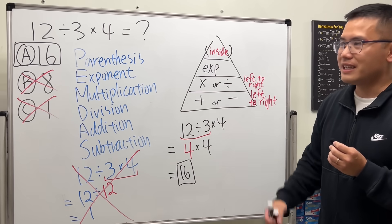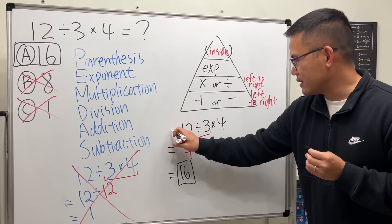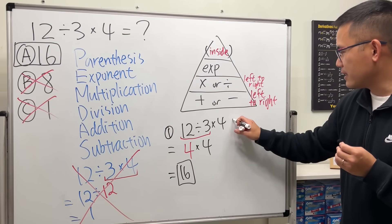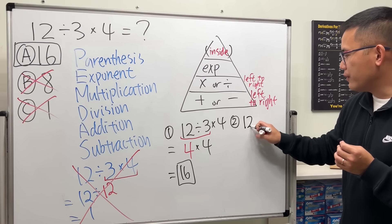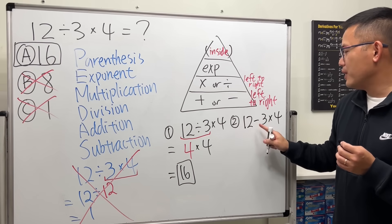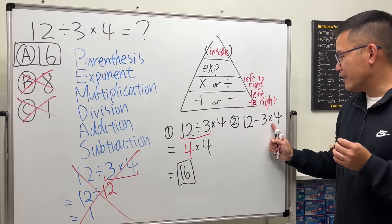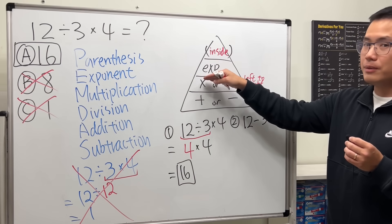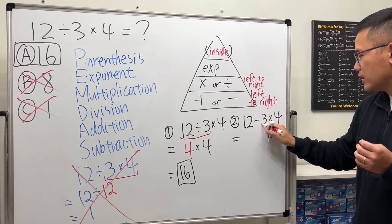And now let me give you guys another example. Just say this is number one, let's practice another one. For example, if we have 12 minus 3 times 4, as you can see we have subtraction, which is the bottom level, and then we have multiplication, which is the level above.